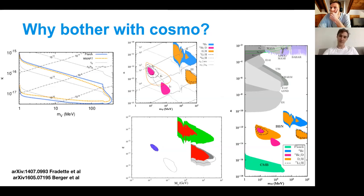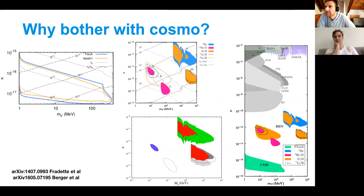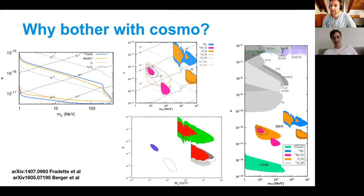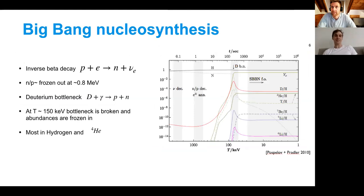Looking at the effect of coupling to the Standard Model: ground-based experiments conk out pretty quickly, then you have supernova observations which can go a little bit lower, and then your BBN and CMB constraints — those previous ones are the gray ones. Your BBN and CMB are looking at ridiculously weakly coupled particles. Even if your coupling is produced by effective operators at a very high scale, you're still going to have some constraints.